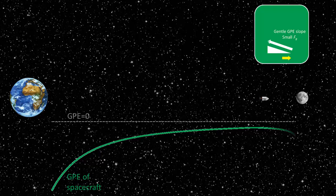Beyond the null point, the spacecraft starts to lose GPE as it travels towards the Moon, telling us that the net gravitational force is now directed towards the Moon.